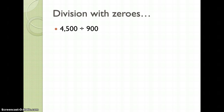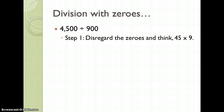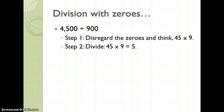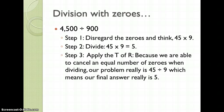Let's try 4,500 divided by 900. Disregard the zeros and think 45 divided by 9. Then actually divide 45 divided by 9. We're going to apply the test of reasonableness because we're able to cancel an equal number of zeros when dividing. Our problem really is 45 divided by 9, considering both 4,500 and 900 have two zeros apiece — we can get rid of them permanently. So our problem really is 45 divided by 9, which means our final answer is 5.